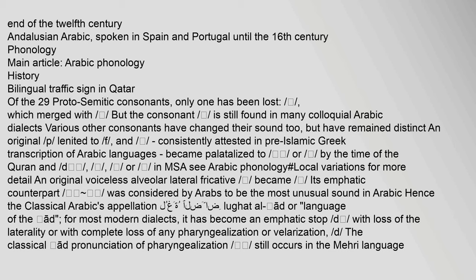Of the 29 Proto-Semitic consonants, only one has been lost, which merged with another, but that consonant is still found in many colloquial Arabic dialects. Various other consonants have changed their sound but have remained distinct. An original voiceless alveolar lateral fricative became its emphatic counterpart; this was considered by Arabs to be the most unusual sound in Arabic, hence Classical Arabic's appellation 'Lughat al-Dad' or 'language of the Dad'. For most modern dialects, it has become an emphatic stop with loss of the laterality. The classical Dad pronunciation still occurs in some modern South Arabian languages.